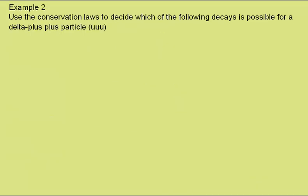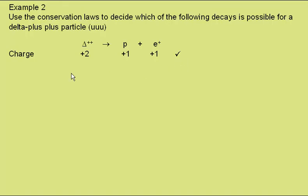Example two: use the conservation laws to decide which of the following decays is possible for a delta-plus-plus particle, which consists of three up quarks. The first decay is for the delta-plus-plus to become a proton plus a positron. In terms of charge, the delta-plus-plus has a charge of plus two, the proton a charge of plus one, the positron a charge of plus one — so in terms of charge conservation this decay is possible. Baryon number: the delta-plus-plus is a baryon with a baryon number of plus one, as does the proton; the positron is an anti-lepton and so has a baryon number of nought. So we have plus one on both sides — baryon number conservation is satisfied.